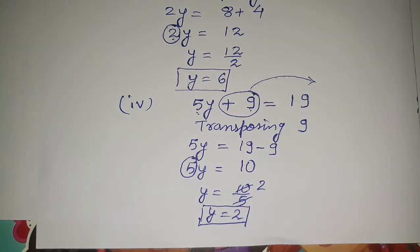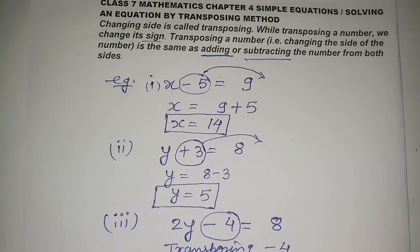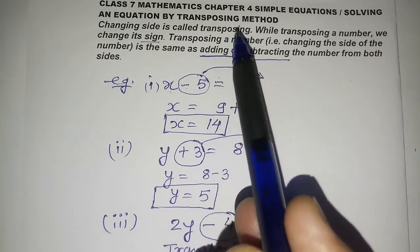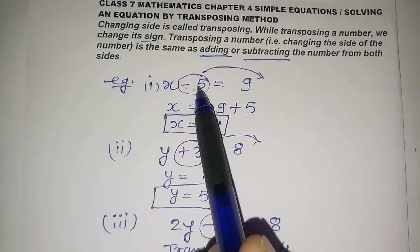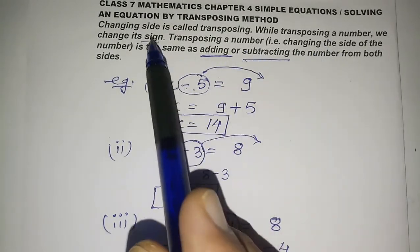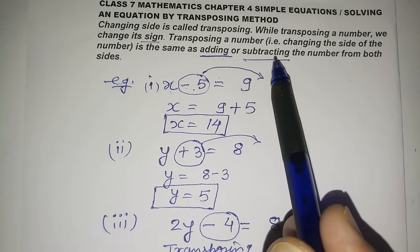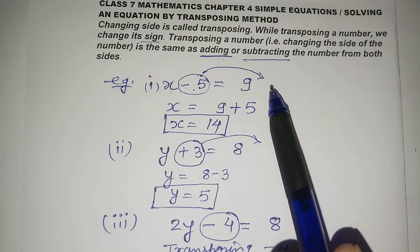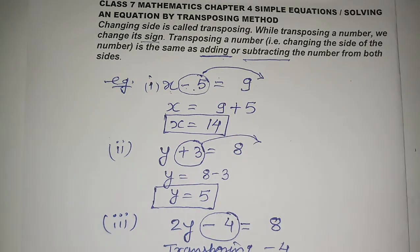You can verify: put y equals 2, you get 5 times 2 equals 10, then 10 plus 9 equals 19 — correct! So, the transposing method: changing side is called transposing. Plus becomes minus when we move a number from the left-hand side to the right-hand side — we change its sign, and it is the same as adding or subtracting.